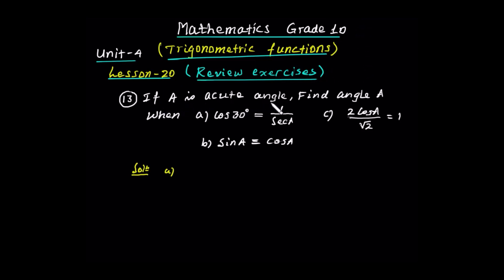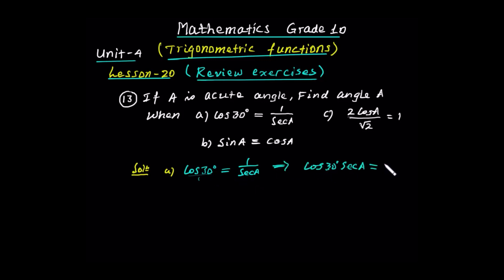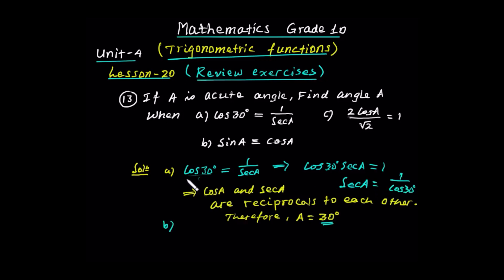If A is an acute angle, find angle A when: (a) cos A is equal to 1 over A; (b) A is equal to cos A; (c) 2 cos A over root 2 is equal to 1. The secant of A is equal to 1 over cos A.